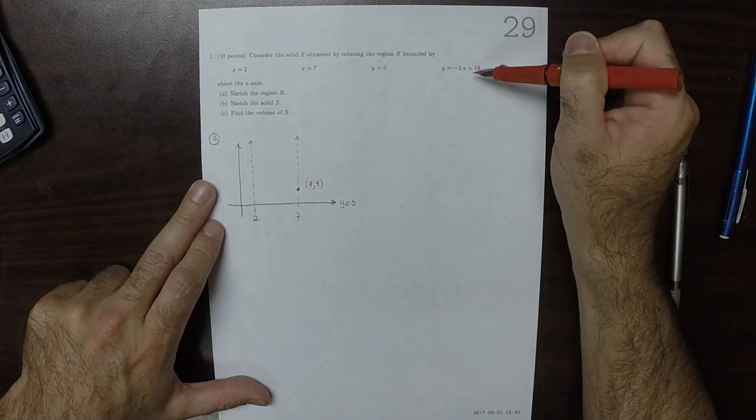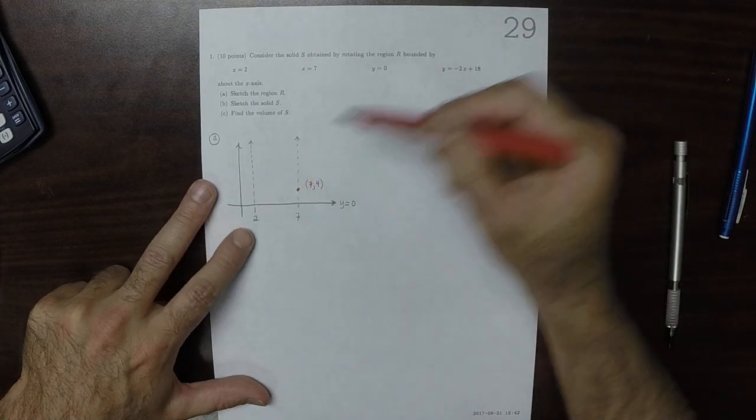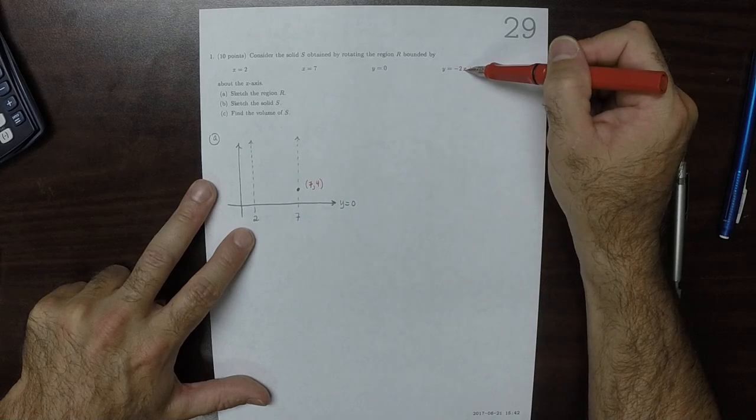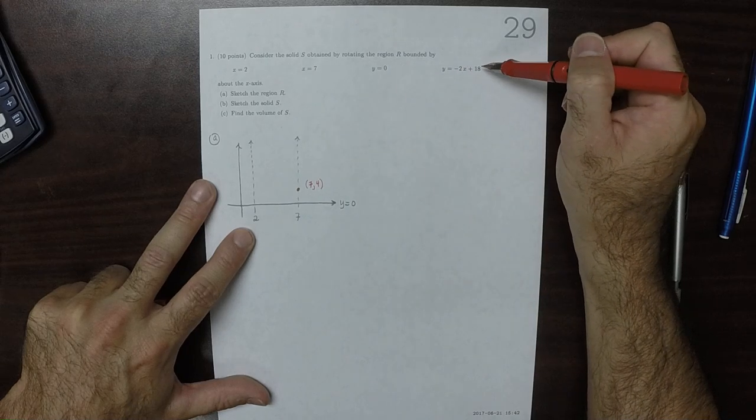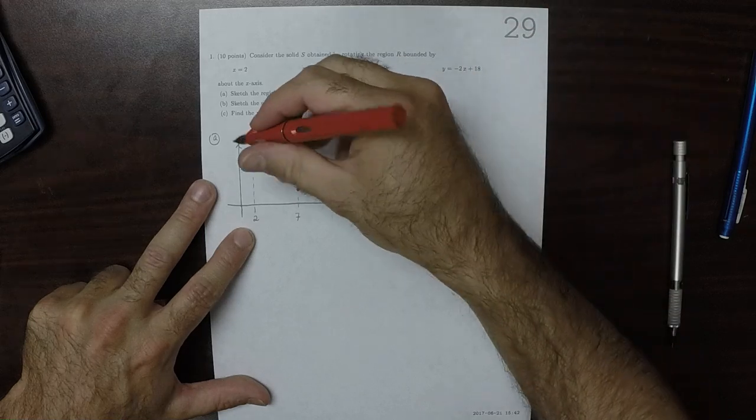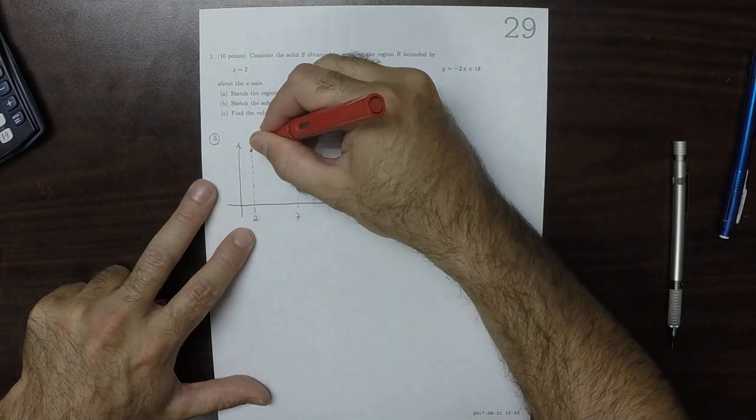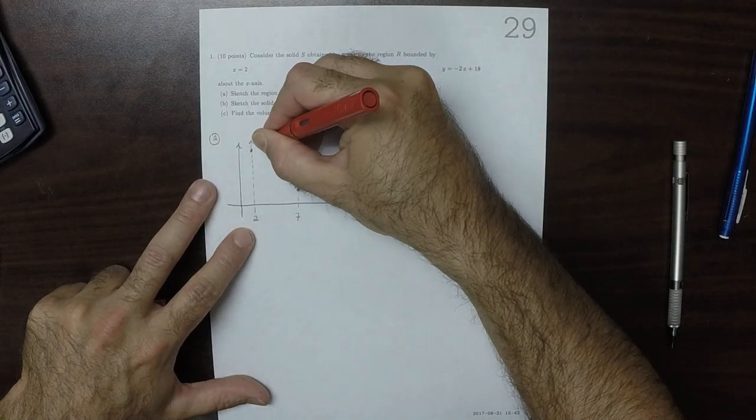And then if we plug in 2, negative 2 times 2 is negative 4, and then plus 18 is 14. So that point right there would be the point 2, 14.